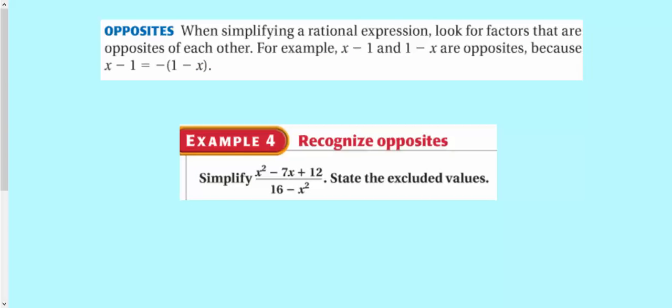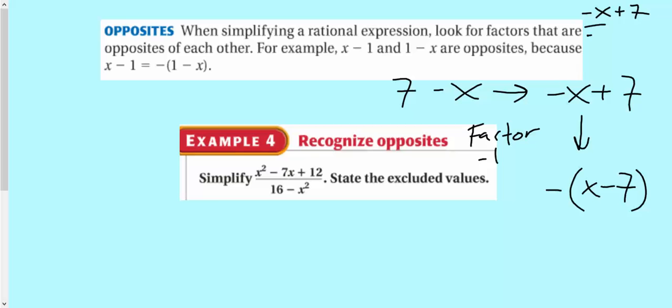Okay, this next concept, it's called opposites, is really important. If you see something such as 7 minus x, what you're going to want to do is you're going to want to rewrite it as negative x plus 7. Now, after that, what you're going to want to do is you're going to factor out negative 1. And so you have negative 1 on the outside, and then you have x minus 7. So this skill is really important. So for example, this question right here.